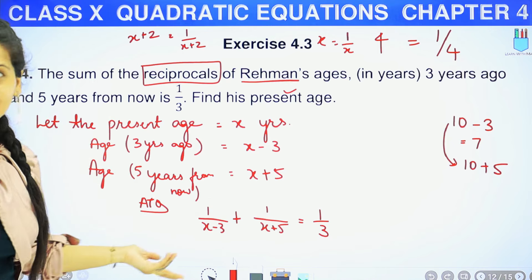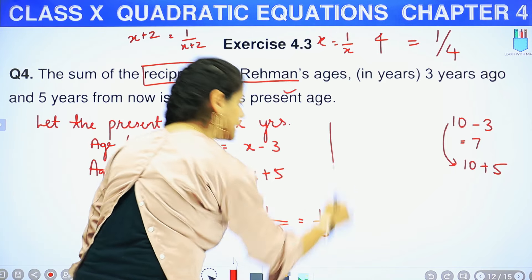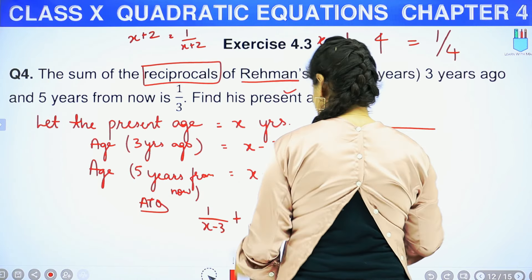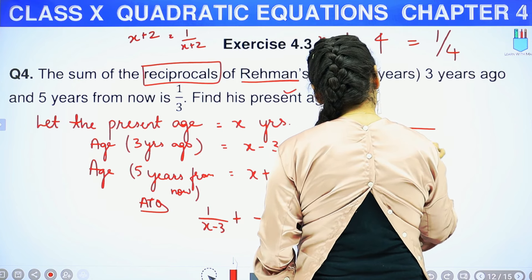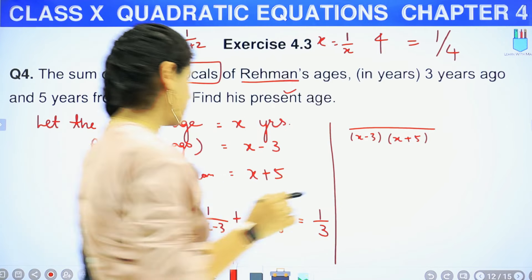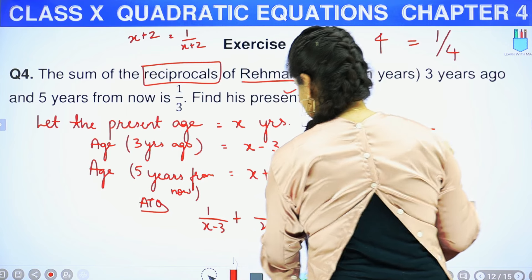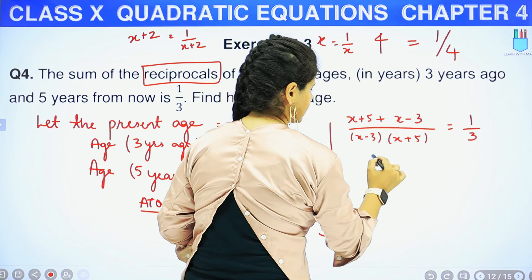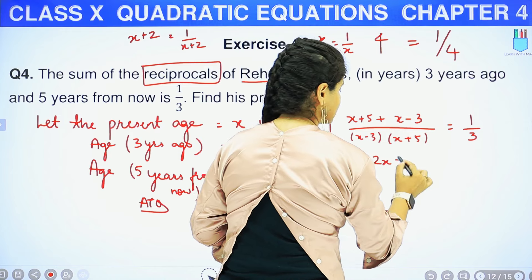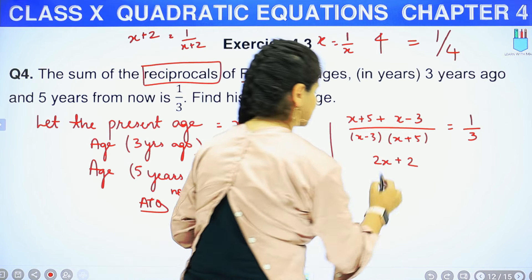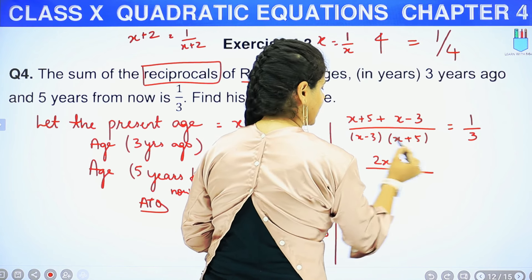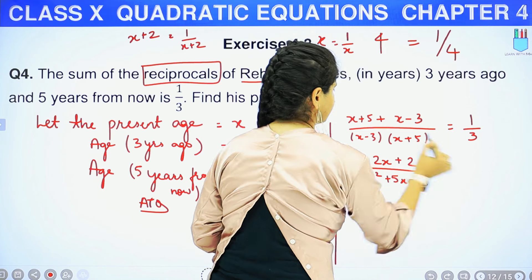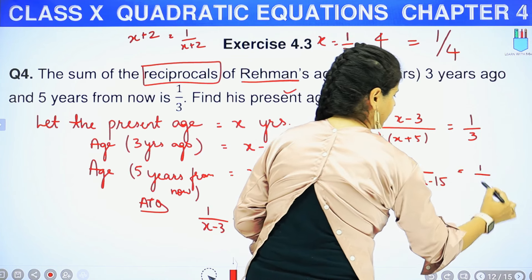अभी यह quadratic equation नहीं बनी क्योंकि X square नहीं दिख रहा. तो इसको solve करते हैं — LCM लेंगे. LCM है (X minus 3)(X plus 5). ऊपर आएगा (X plus 5) plus (X minus 3). नीचे (X minus 3)(X plus 5). Equals to 1 upon 3. ऊपर: X plus X = 2X, और 5 minus 3 = 2, so 2X plus 2. नीचे multiply करें: X² + 5X - 3X - 15 = X² + 2X - 15. So (2X + 2)/(X² + 2X - 15) = 1/3.